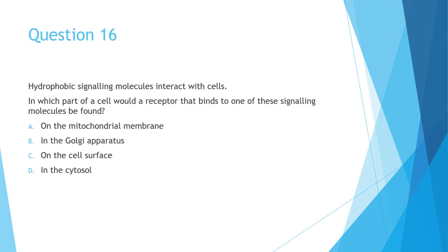Question 16 states that hydrophobic signaling molecules interact with cells. The question asks you in which part of a cell would a receptor that binds to these molecules be found? The answer here is in the cytosol. I can understand why around a quarter of the cohort selected option C. After all, the signaling molecules that interact with cells are likely to have originated from outside the cell. The word that indicates that this is option B is the first one. These signaling molecules are hydrophobic, so they can cross the phospholipid layer cell membrane. As a result, a receptor that binds to these signaling molecules is in the cytosol.